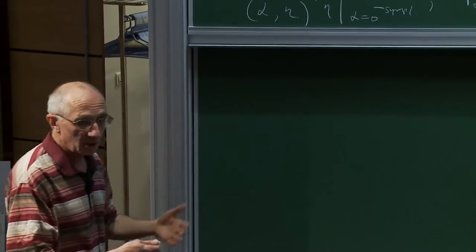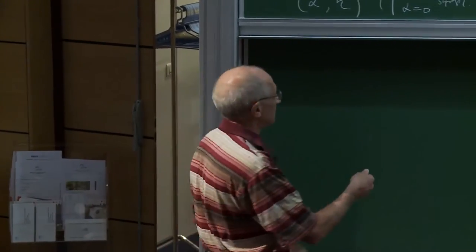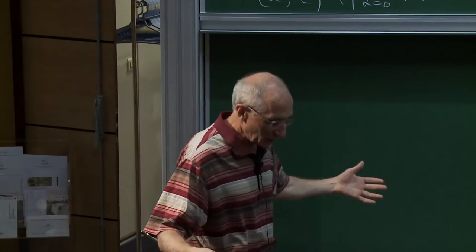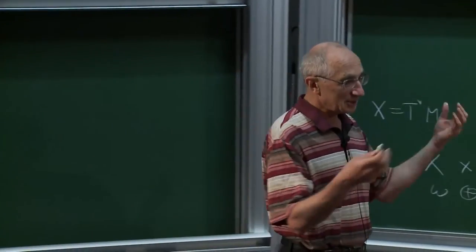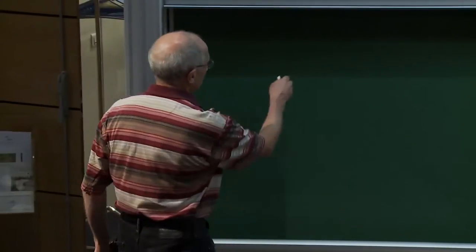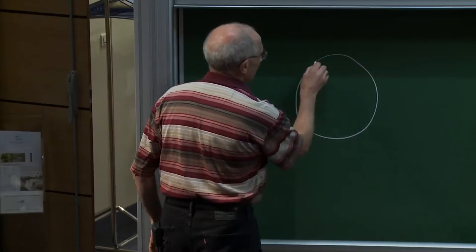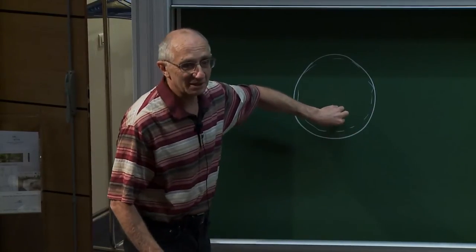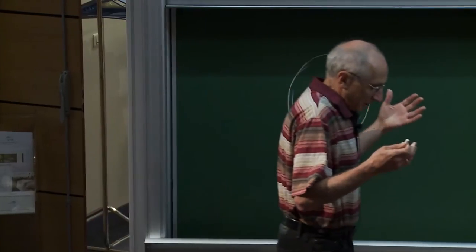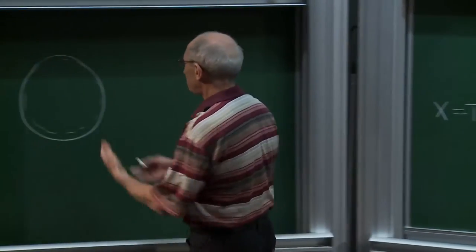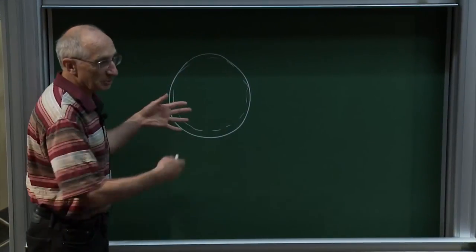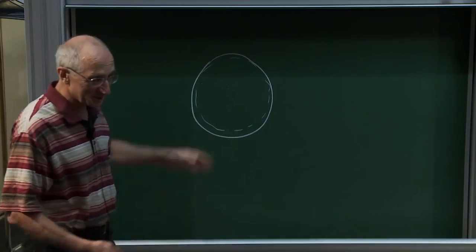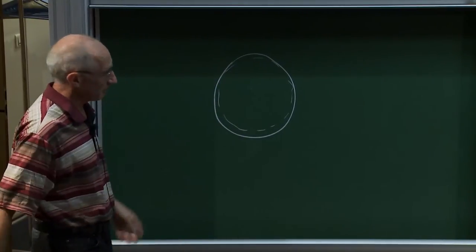We can ask if the same thing holds in the closed case. To get into the closed case, you need to solve an extension problem: take a closed manifold, remove one point, apply Gromov's theorem to the complement, and then you have a structure near the boundary of a ball that you need to extend. This turns out to be extremely difficult, but in the contact case it is not as difficult as in the symplectic case.